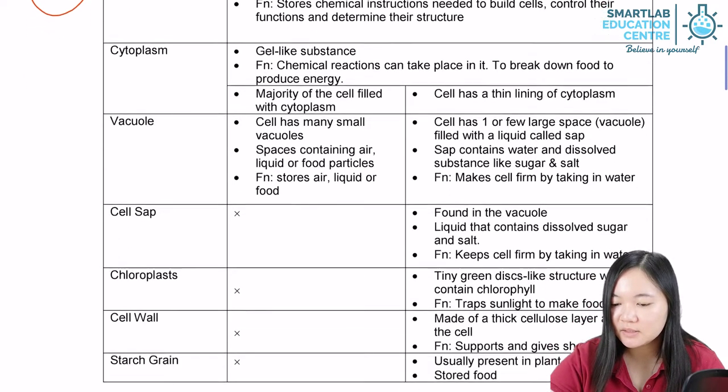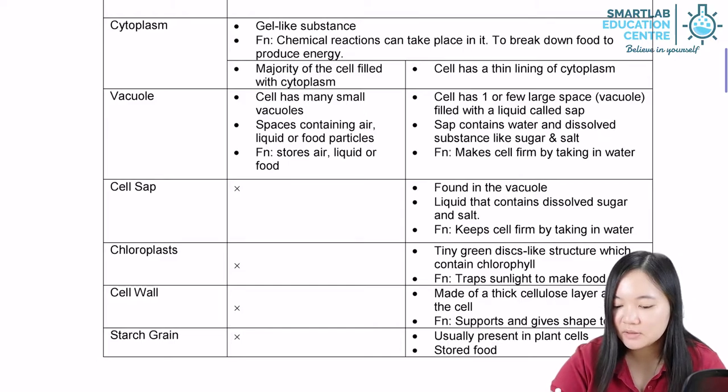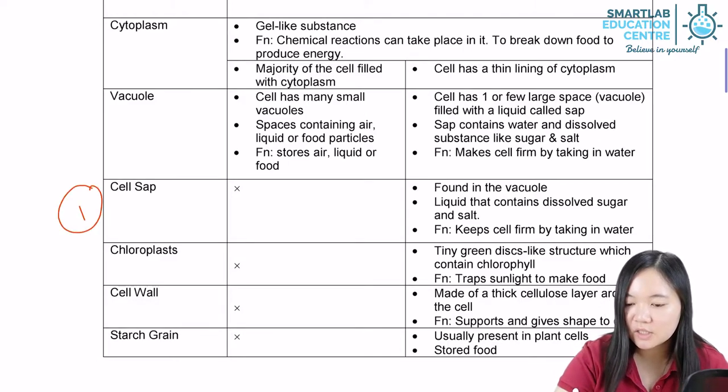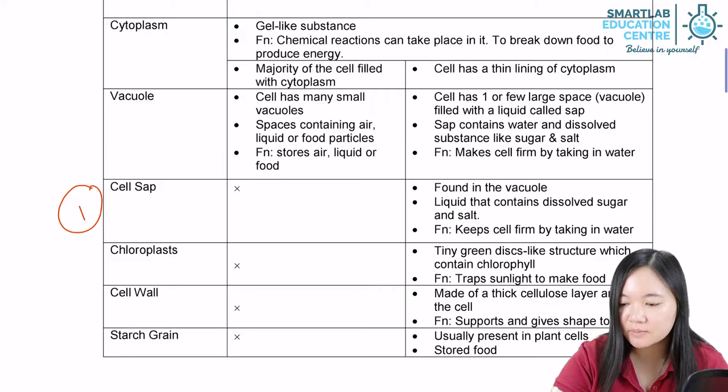Here, this is the first difference. Animal cells do not have cell sap.